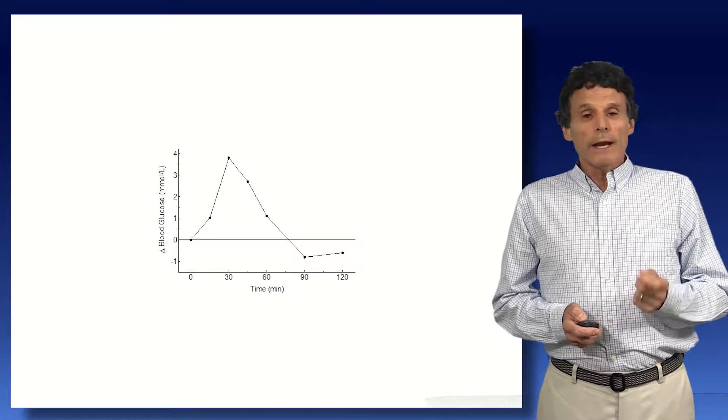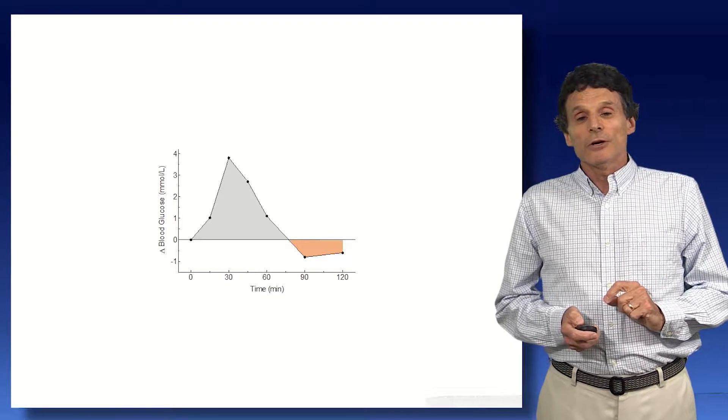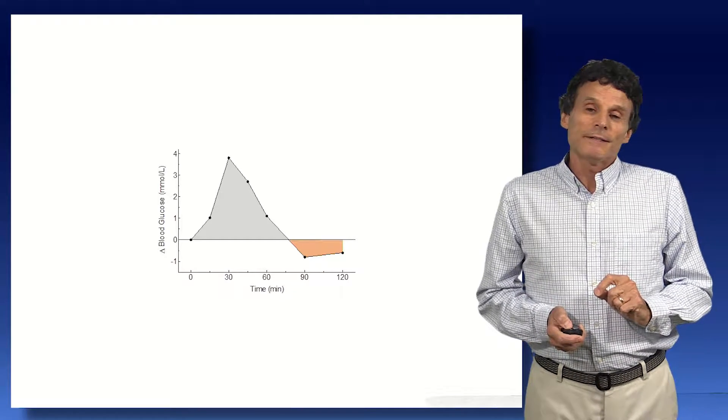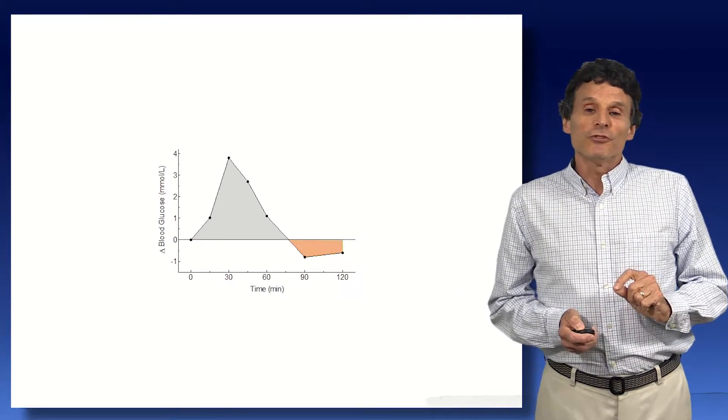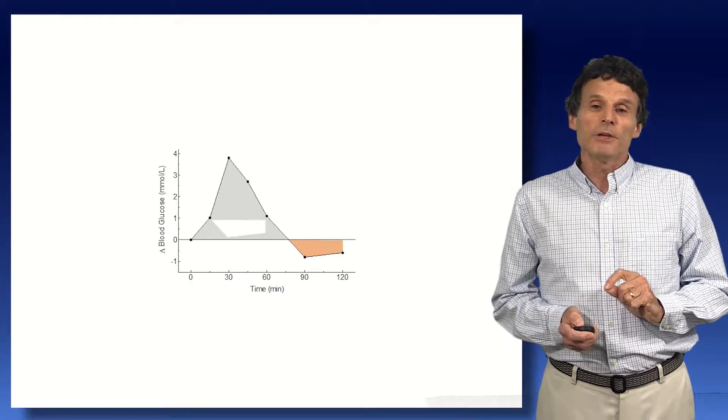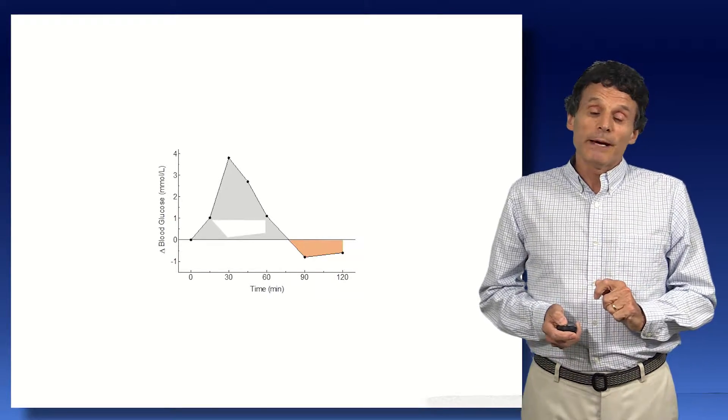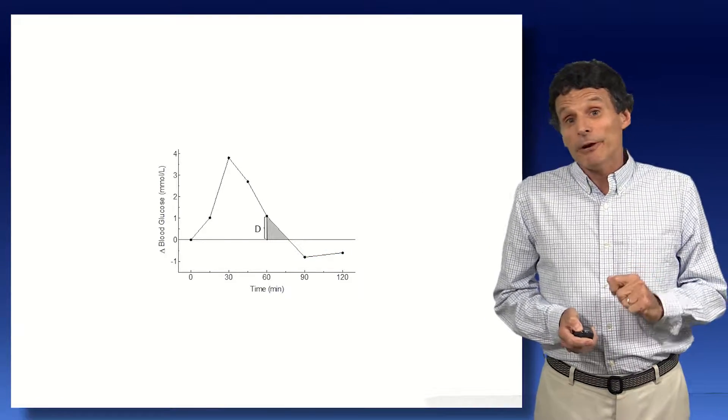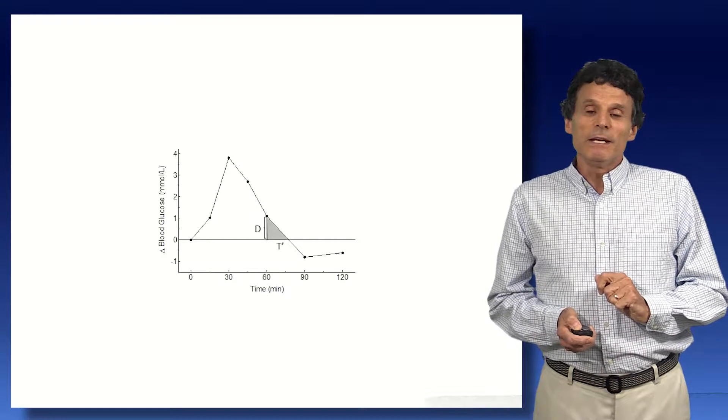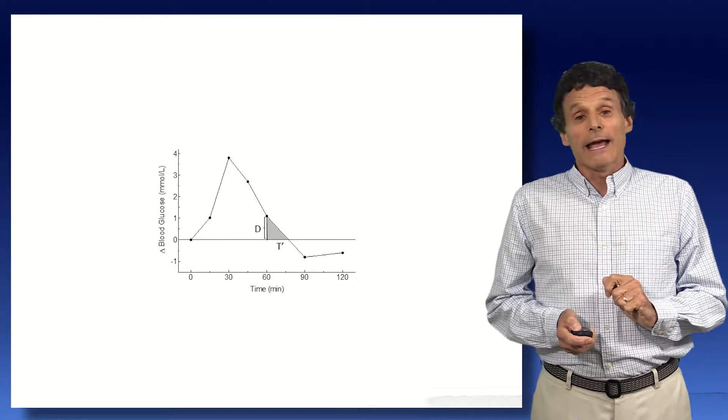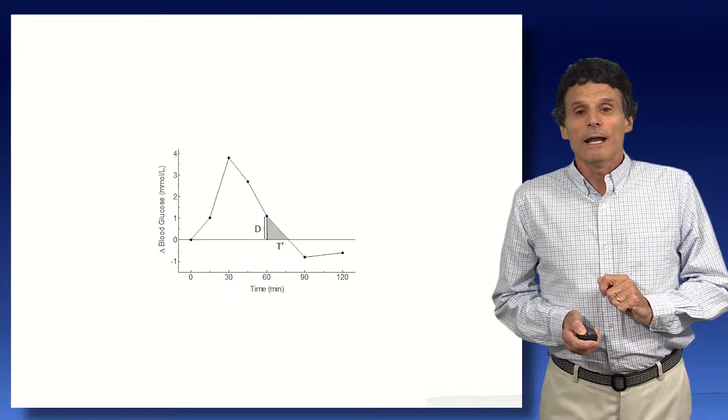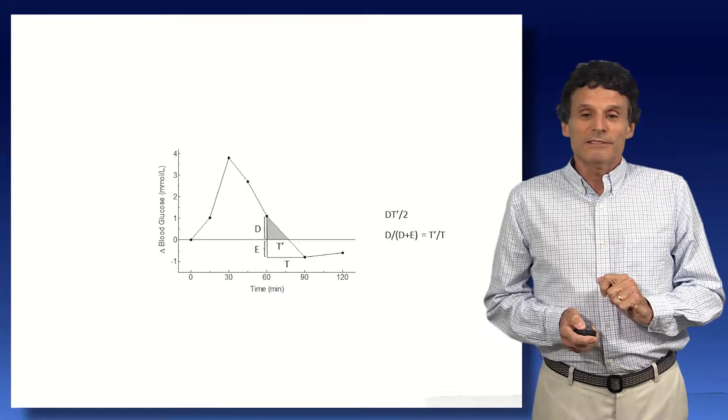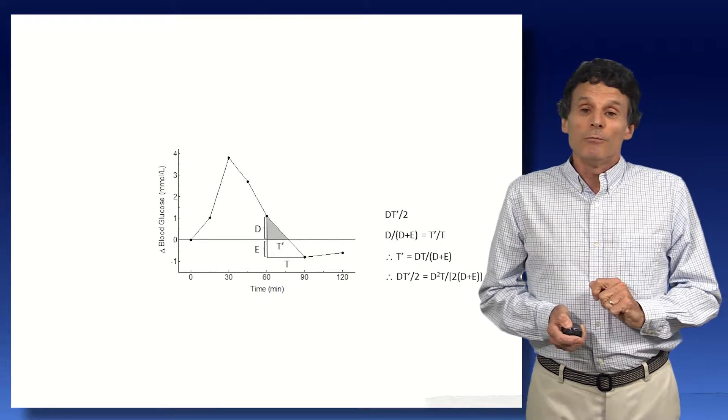But the problem with that was what happened when the blood glucose undershot the baseline as shown in the tan area here. We only wanted to calculate the gray, but if we used the trapezoid rule, we'd end up subtracting the tan area from the gray. And in this case, that would make about a 25% difference in the result. So what we had to do, I had to figure out how do we calculate the area of that little segment, which went down to figuring out how do we find out what T prime is. And I realized, of course, that T prime over T equals D over D plus E. And so we could then work that out.